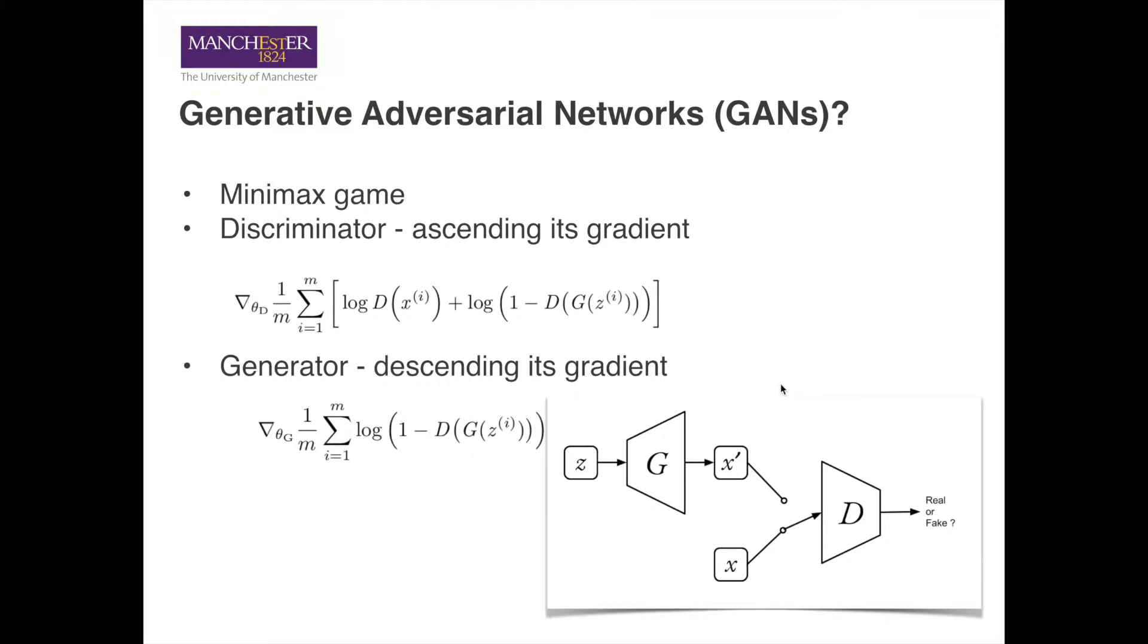To train a neural network towards a specific task, we need to define the objective for the training process. The objective of the discriminator is to maximize the value of the following function.